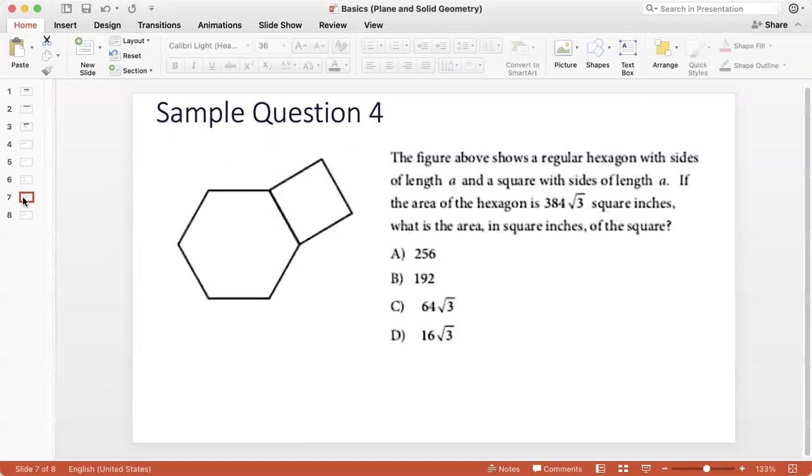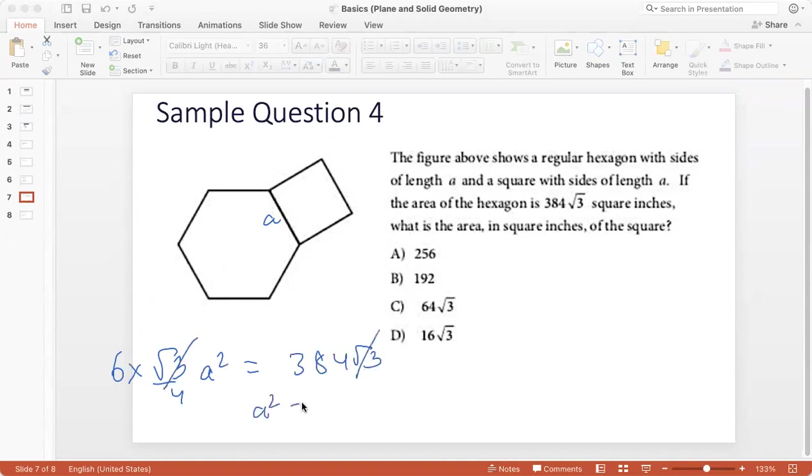Sample question 4. The figure shows a regular hexagon with sides of length A and a square with sides of length A. So we have a regular hexagon and a square that share a side and the length is A. If the area of the hexagon is 384 root 3 square inches, what is the area in square inches of the square? So we know that the area of the hexagon is 6 times root 3 by 4 A squared, 6 times the area of one equilateral triangle. And that is given as 384 root 3.